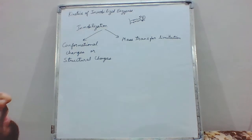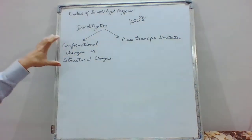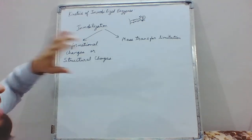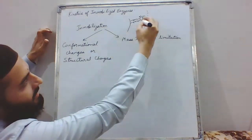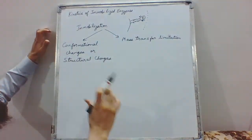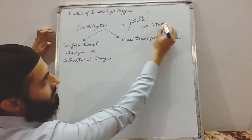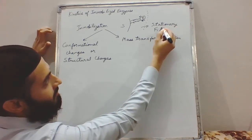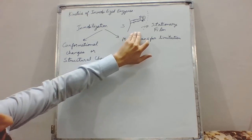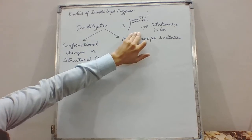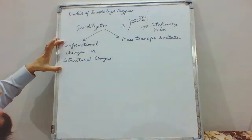Once the structure of the enzyme is altered, its activity will be altered. Additionally, if it is being immobilized using bonding methods in which chemical bonds are formed, mass transfer limitations are always present. There is a stagnant stationary film at any surface in which diffusion occurs only by molecular diffusion, making it very slow. So mass transfer limitations are always there, and conformational or structural changes are also involved.